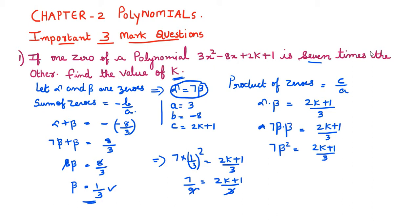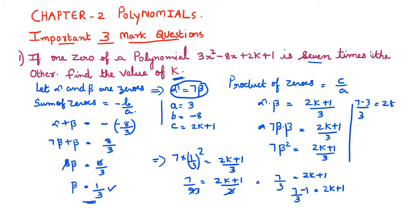Simplifying: 7 by 3 equals 2k plus 1, so 7 by 3 minus 1 equals 2k. Taking the LCM: (7 minus 3) by 3 equals 2k, giving 4 by 3 equals 2k. Cancelling the 2, the value of k is 2 by 3. So the answer for this question is k equals 2 by 3.